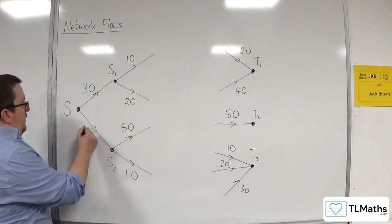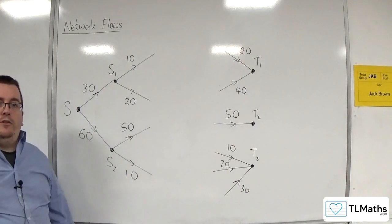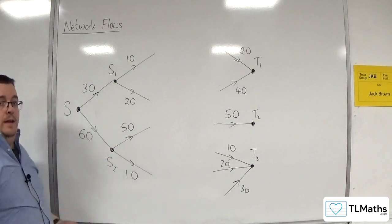So 50 plus 10 is 60. But by rights, you could have 6 million there if you really wanted to.